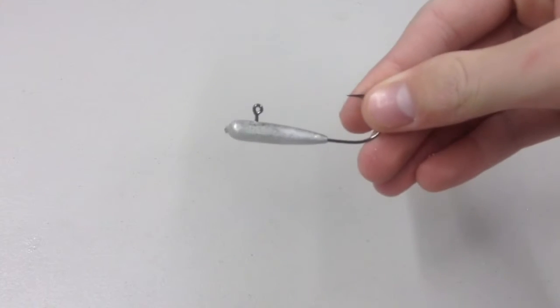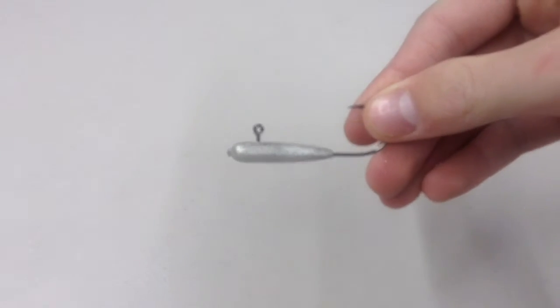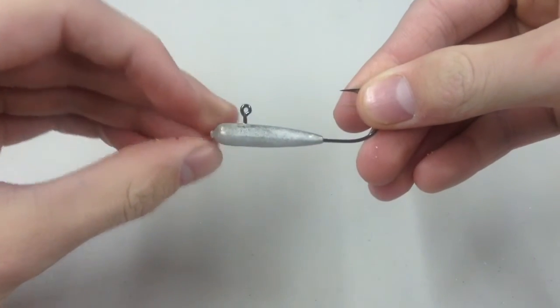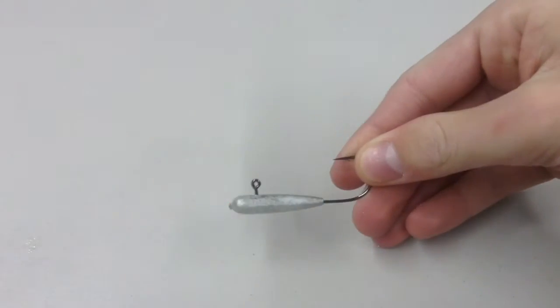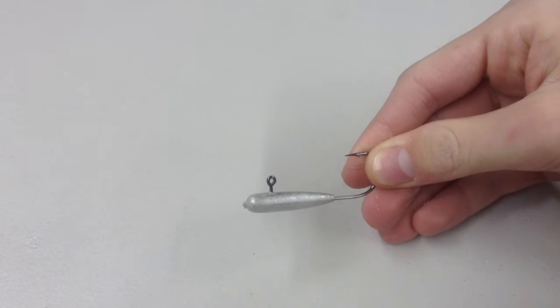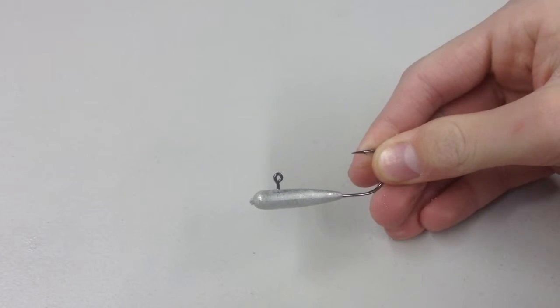And these heads, they have this gap right there between the hook, or the eye of the hook, and the actual weight itself. It's the perfect length for rigging any plastic or any tube. So that's why I really like those.